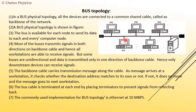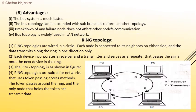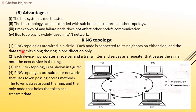Bus topology uses Ethernet at 10 Mbps speed. The bus topology can be extended with sub-branches to form another network. A breakdown or failure of any node does not affect other nodes' communication. Bus topology is widely used in local area networks.